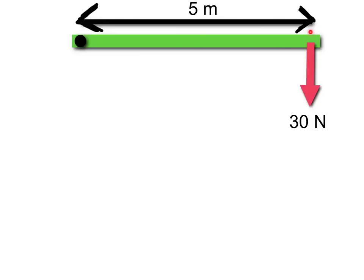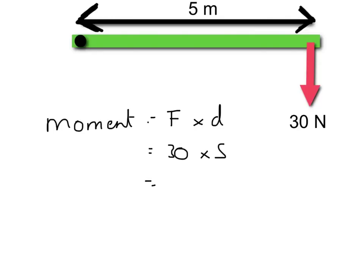To work out what the moment is, a moment is equal to the force times the perpendicular distance. So that's going to be 30 times 5, which is 150 newton metres. There's no slash here because it's newtons times metres, not newtons divided by metres — so it's newton metres, not newtons per metre.